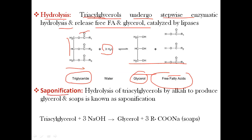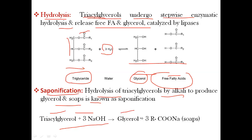The next property is saponification. The hydrolysis of triacylglycerols by alkali produces glycerol and soap in a reaction known as saponification. In this reaction, triacylglycerol reacts with three molecules of NaOH and releases glycerol and forms soap.